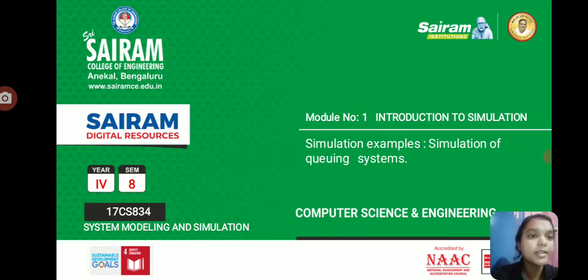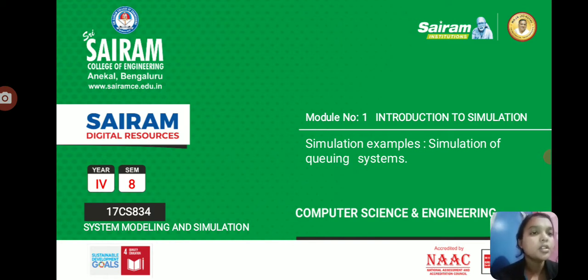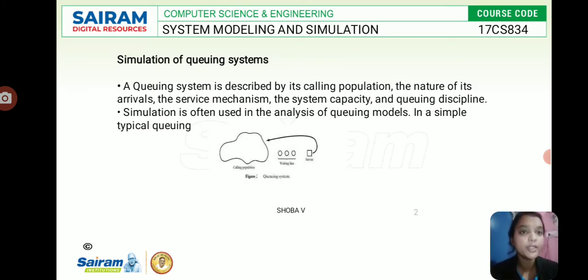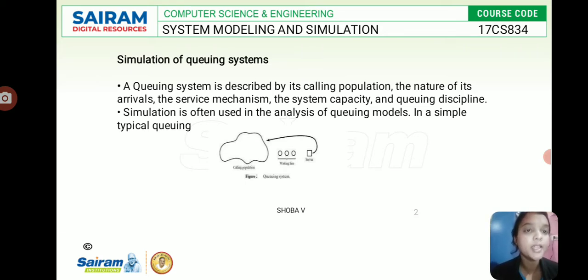Good morning and welcome to this class on simulation examples, specifically the simulation of a queuing system. This is under module number one, introduction to simulation. The queuing system is characterized by the calling population, number of arrivals, service provided, and the number of customers waiting in a line. A post office is a very good example of such a queuing system.